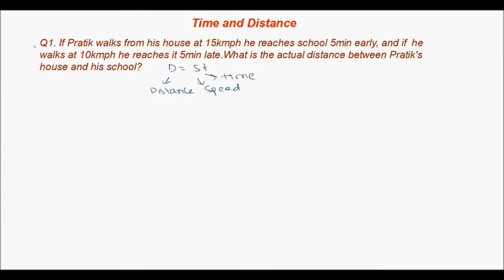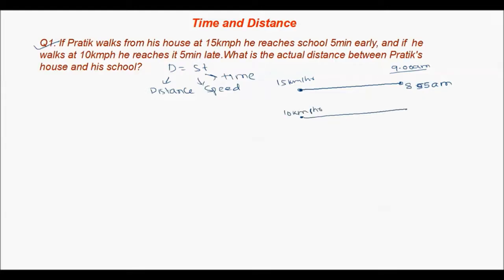Question number one: if Pratik walks from his house at 15 km per hour he reaches his school 5 minutes early. Suppose Pratik starts from his house at 15 km/h and has to reach school at 9 am, he reaches 5 minutes early, so he arrives at 8:55 am. In the second case, if he travels at 10 km/h, he is 5 minutes late, meaning he arrives at 9:05 am.